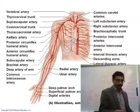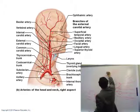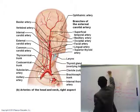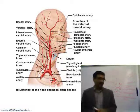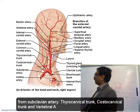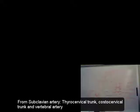From the subclavian artery, three arteries arise: the thyrocervical trunk, the costocervical trunk, and the vertebral artery. The same three branches arise from both the right and left subclavian arteries.